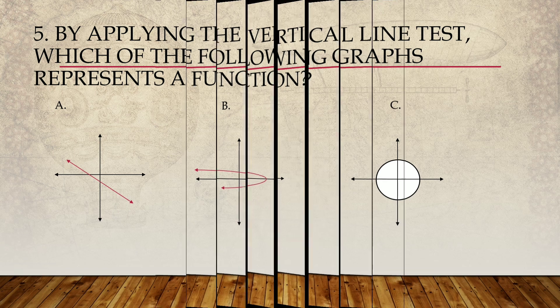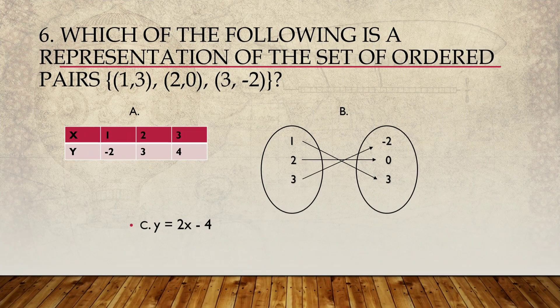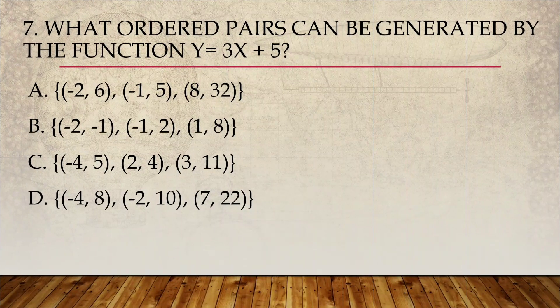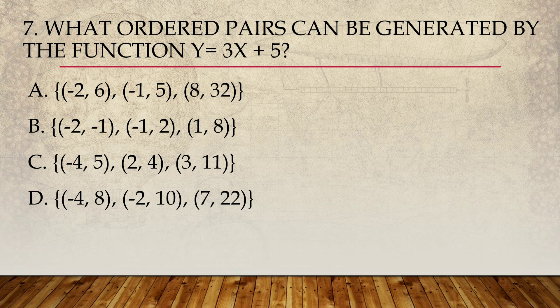And number six, which of the following is a representation of a set of ordered pairs? Is it A, B, or C? And number seven, what ordered pairs can be generated by the function y is equal to 3x plus 5? Is it A, B, C, or D?